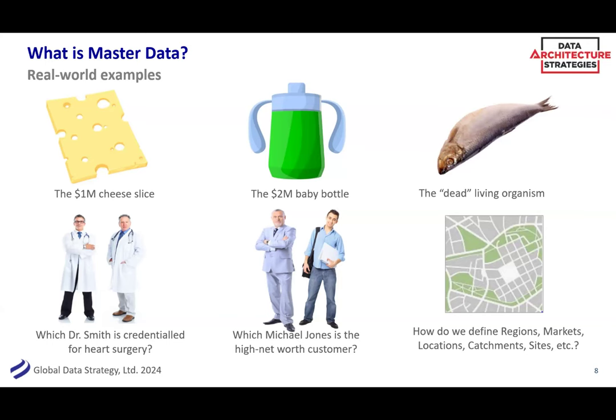On a similar note, we worked with a baby bottle manufacturer and their fear-inducing story was the $2 million baby bottle. They had a very popular product, well-loved around the globe, and they were trying to do more online sales through Amazon. But their master data was so manual and inconsistent — Amazon has a particular format you must use, and their master data is quite strong. This company kept sending master data in the wrong format and kept getting fines. Before it was still worth it to sell on Amazon, they had over $2 million in fines just for having poorly formatted master data.